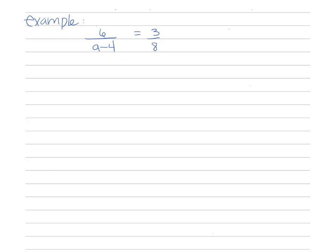Now let's try an example with a rational expression. We have a denominator of a minus 4. Since the variable is in the denominator, we need to be aware of when the denominator equals zero. This problem fails when a minus 4 equals 0, so when a equals 4. We don't want a to equal 4 — it can be anything else.